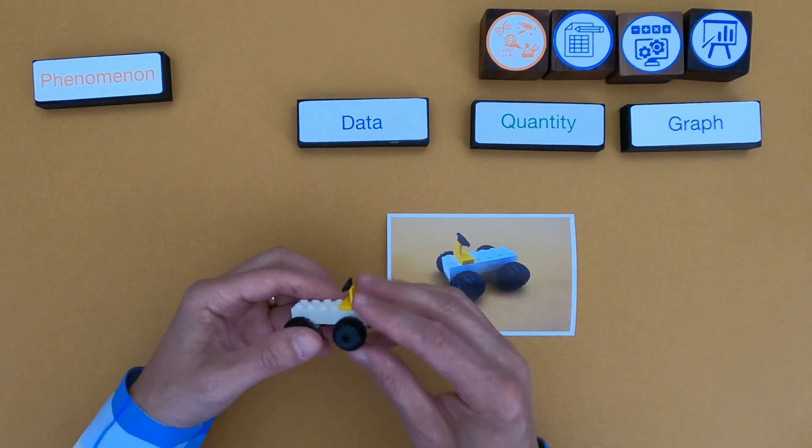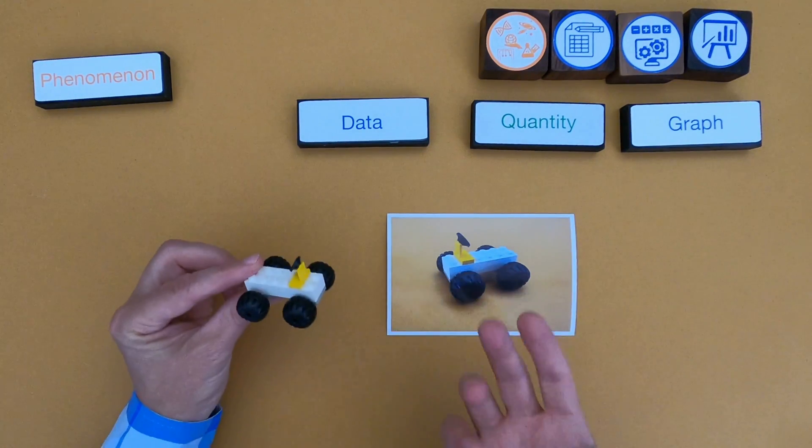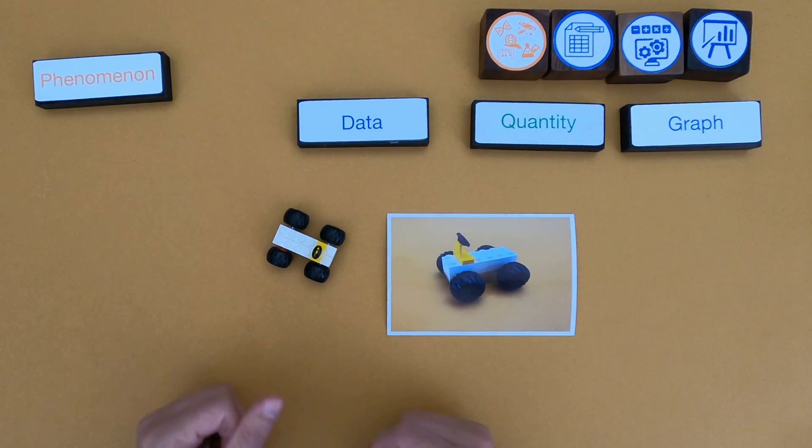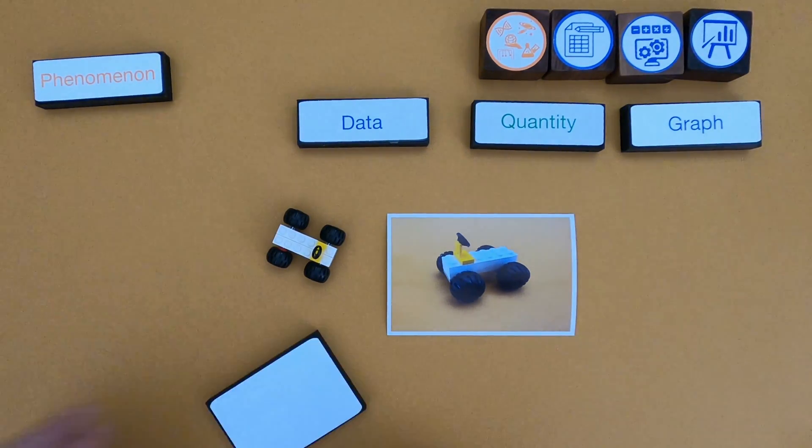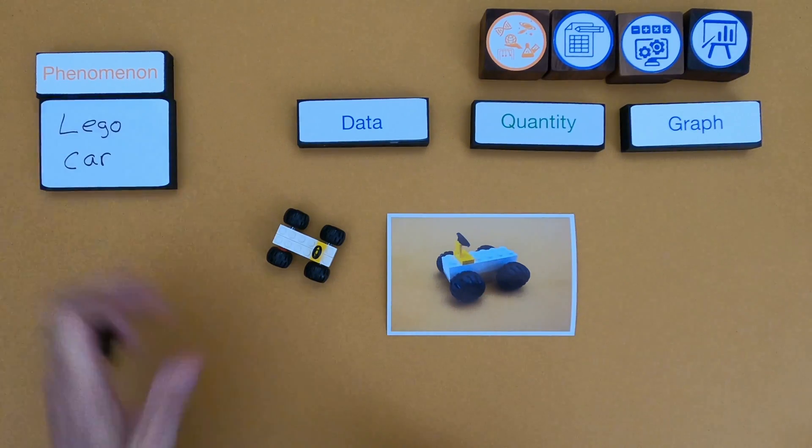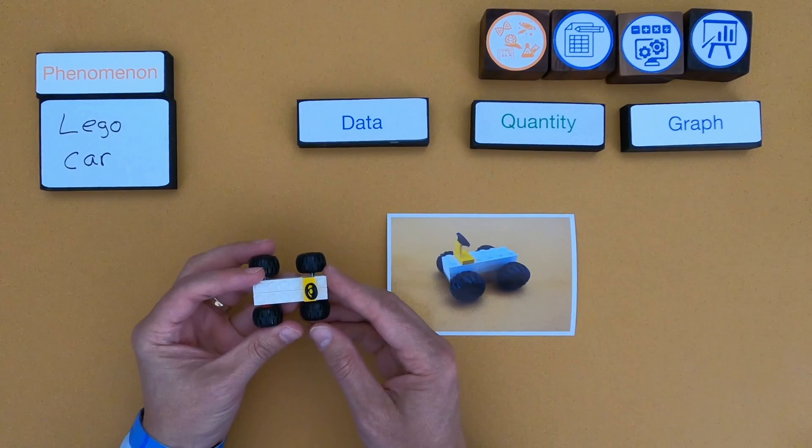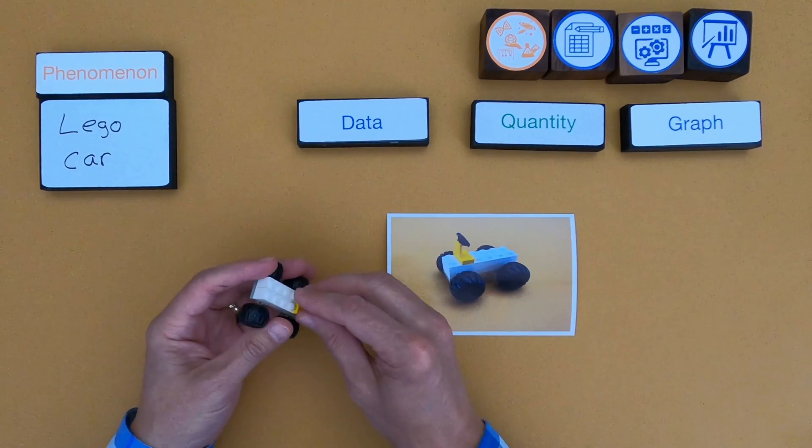Okay, for the next example what we're going to do is try to look at quantitative data from this Lego car. And so the first thing I want to do is define the phenomena. And then the next thing I want to do is I want to take it apart so you can see all the different parts of it. So I'm just going to take a moment to pull all the pieces apart.